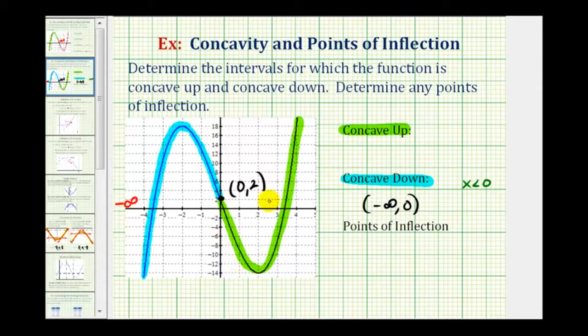And the function is concave up from zero to positive infinity. Or we could say when x is greater than zero. We don't include zero in the interval because that's where it changes concavity, and that's why the point zero comma two is the point of inflection.